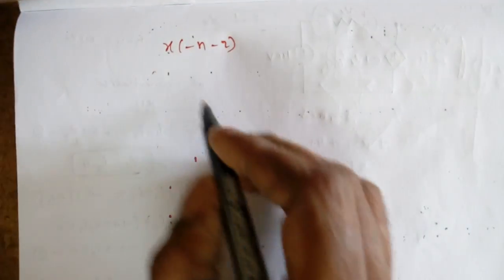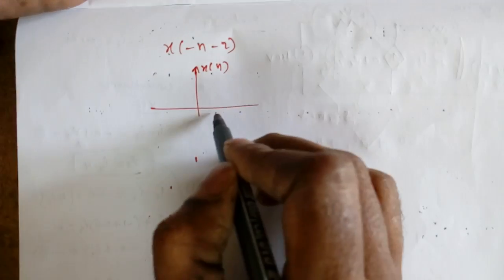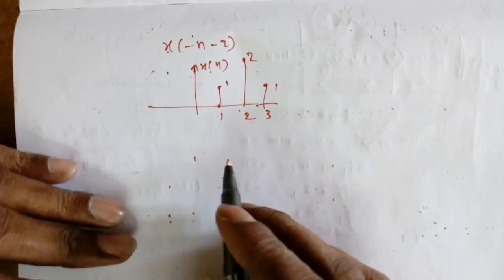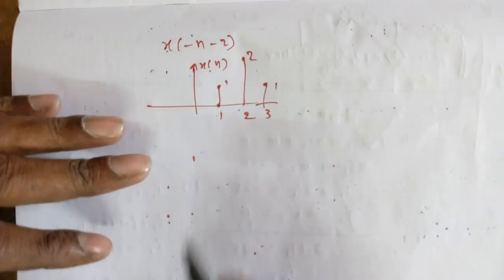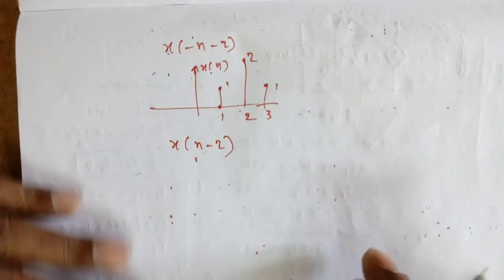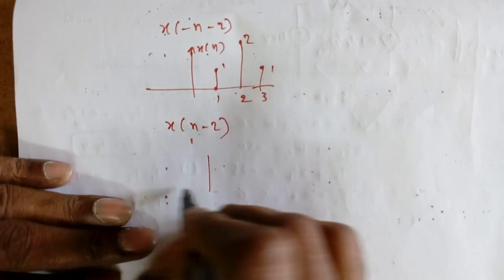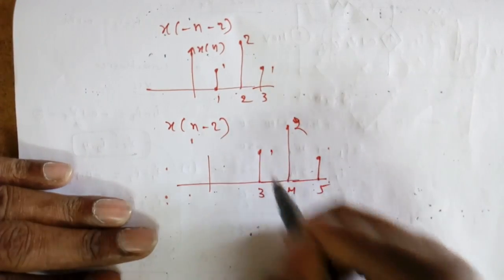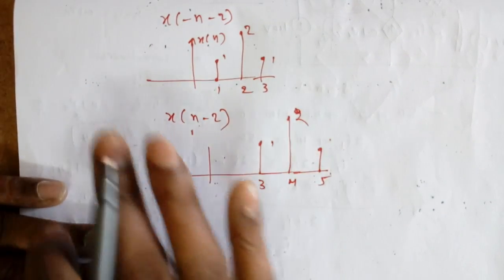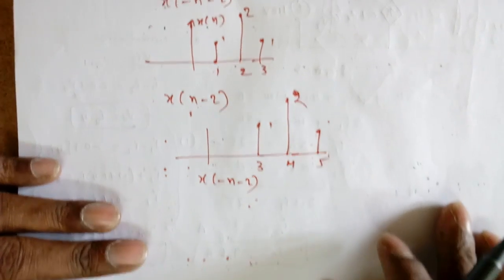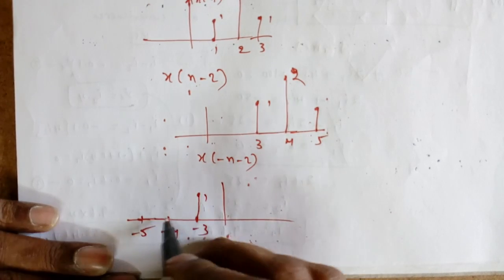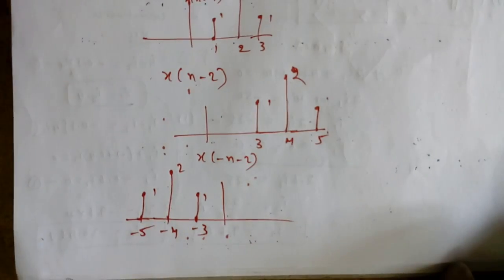Next is x[-n-2]. There are two methods. First method: start with x[n-2], which has values at positions 2, 3, 4, 5, then reverse to get x[-(n-2)] = x[-n+2], giving positions -3, -4, -5 with amplitudes 1, 2, 1. Second approach: take minus common to get x[-(n+2)], first do reversal, then shift.